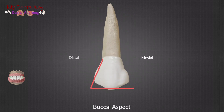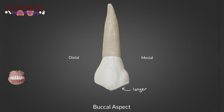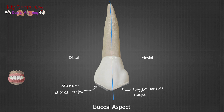Starting from the buccal view, we can see that the tooth has a trapezoidal or pentagonal shape similar to the canines. The mesial slope is longer than the distal slope — this is the only premolar where this is the case. Because of this, the buccal cusp tip is located distally to the midline.